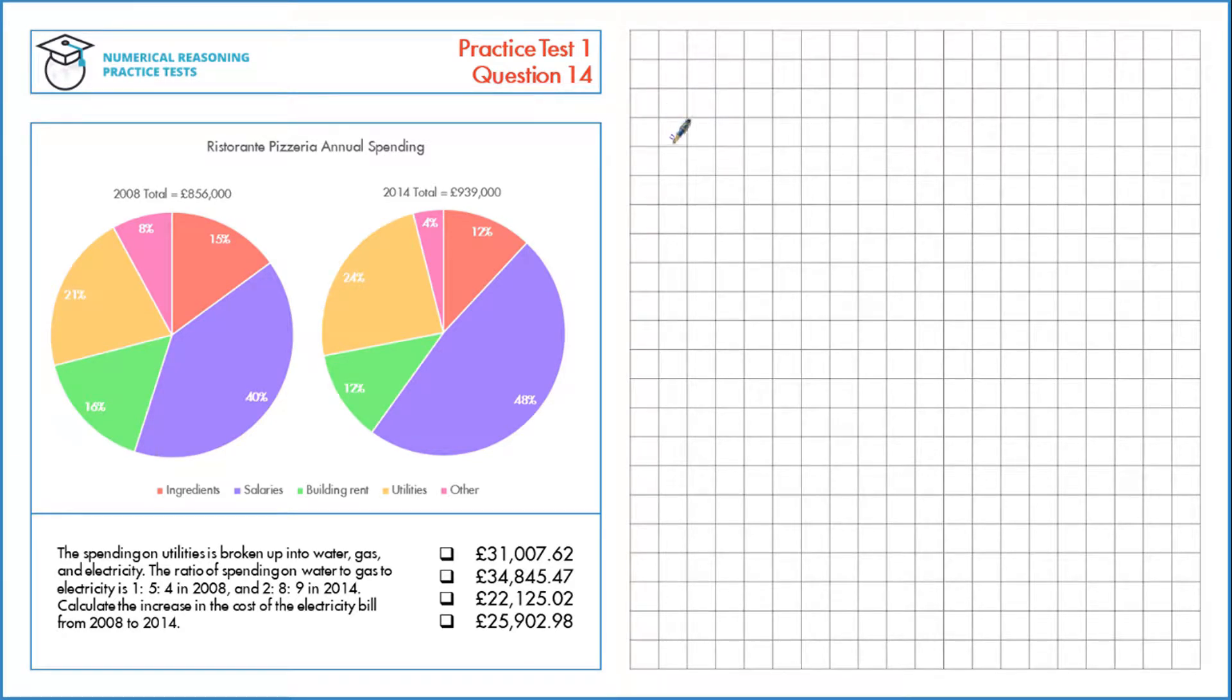The spending on utilities is broken up into water, gas and electricity. The ratio of spending on these is 1 to 5 to 4 in 2008 and 2 to 8 to 9 in 2014. Calculate the increase in the cost of the electricity bill from 2008 to 2014.